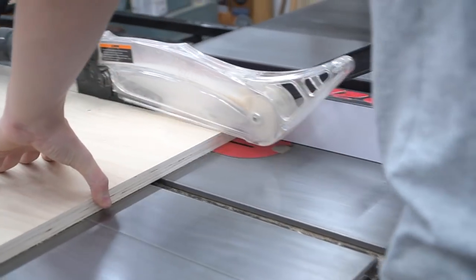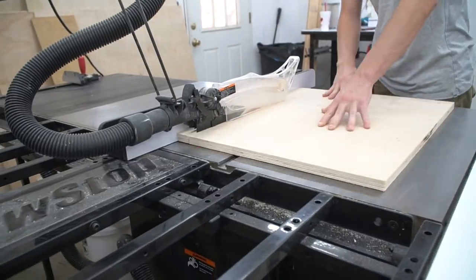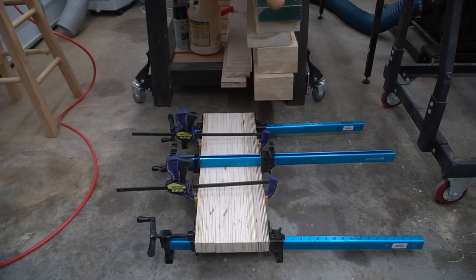Now on to the drawer slides. We have to build up the thickness of the sides so that the drawer sides do not run into the legs. First we cut two 1½ inch wide strips of ¾ inch plywood and glued them together.